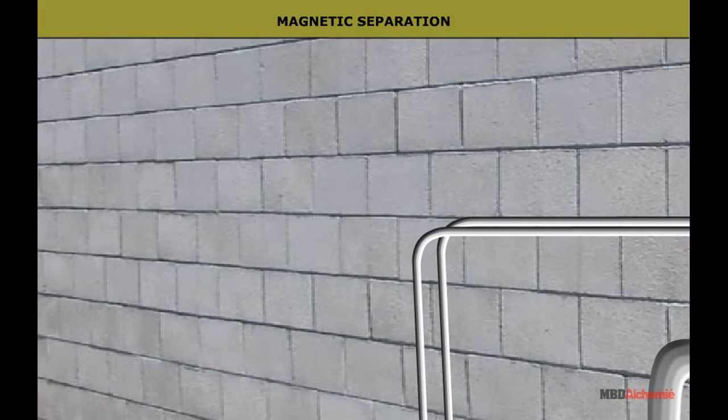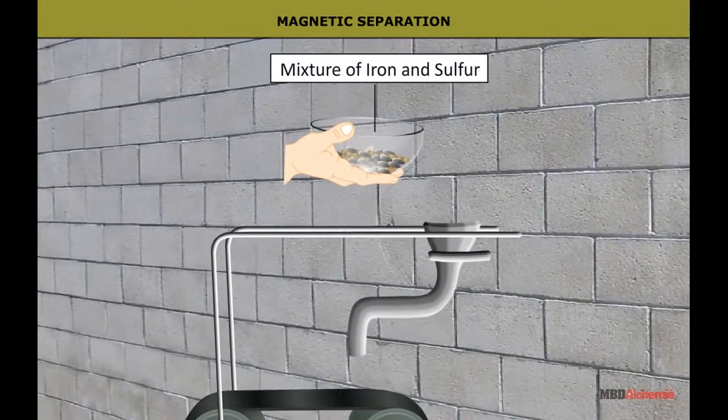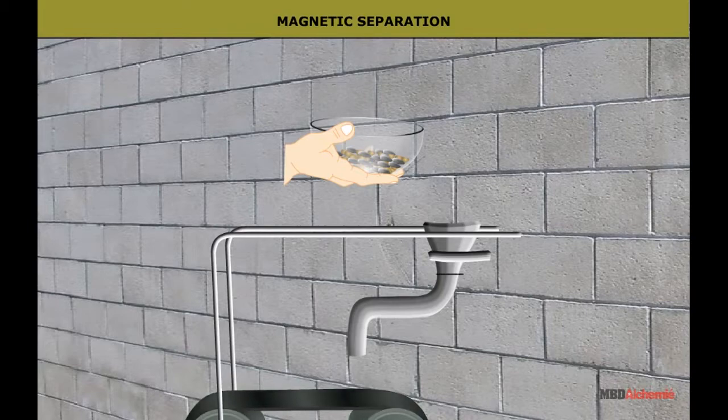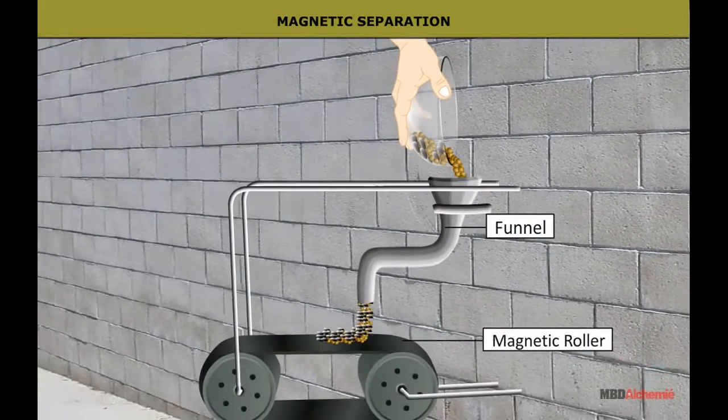Magnetic Separation. In the magnetic separation method, mixture of iron and sulphur is taken in a beaker and it is dropped from the top to the funnel and then it is passed over a magnetic roller.